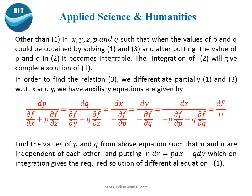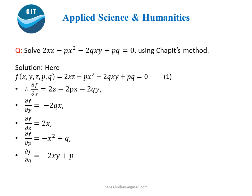Then we find the values of p and q using any two factors such that p and q should be independent of each other, and on putting p and q in dz = p dx + q dy and on integrating, we get the solution of differential equation (1).